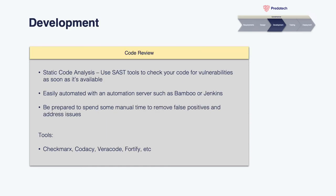We now arrive at one of the most important parts: code review, where you'll use static analysis tools to scan your code for vulnerabilities. As soon as your code is checked in, it should be automatically scanned so issues are picked up as early as possible — this can be automated with a server such as Bamboo or Jenkins. Be prepared to spend some manual time removing false positives and addressing issues found. Do not skip this step — you'll pick up a lot of vulnerabilities here that won't always be catchable through dynamic analysis or penetration testing. Tools available include Checkmarx, Codacy, Veracode, and Fortify. Make sure you choose a vendor that supports your programming language.